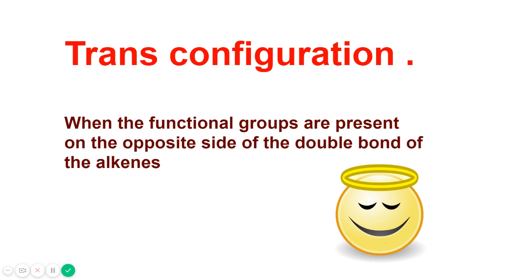On the other hand, when the functional groups are present on the opposite side of the double bond of the alkenes, it's trans configuration. You can remember it by the word transparent. You can see across the transparent glass. So when the functional groups are across the double bond, but they are on the opposite side, it's trans configuration.